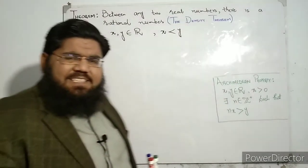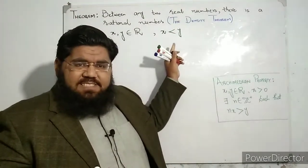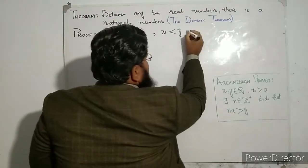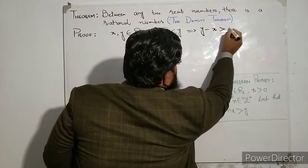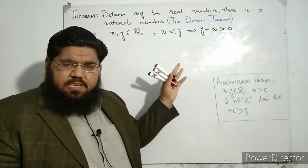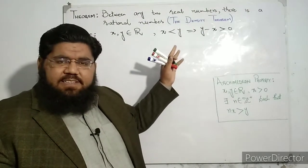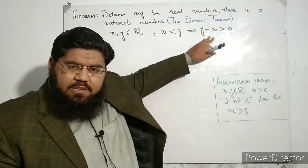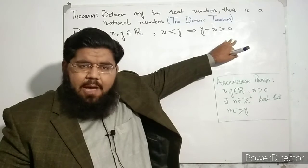We suppose x and y with the ordering x is less than y. You can take y less than x as well. Now if x is less than y, this implies that y minus x is greater than zero — this is a simple algebraic manipulation step. So y minus x is a real number greater than zero.